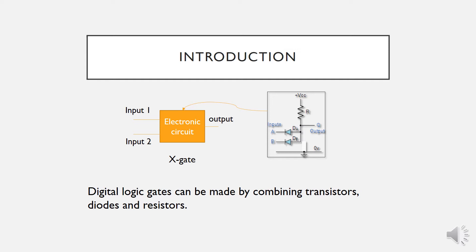As an example, I'll create one logic gate which I name X gate, which has two inputs — input one and input two — and one output. Logic gates internally are built based on a combination of electronic components such as transistors, diodes, and resistors.